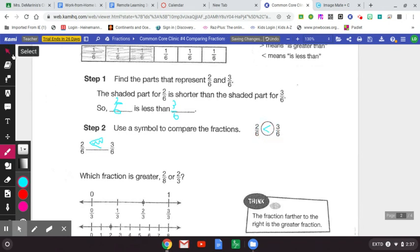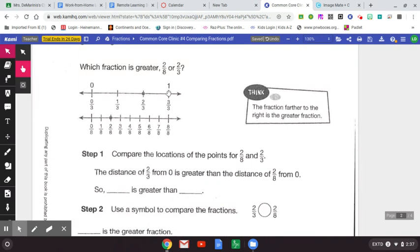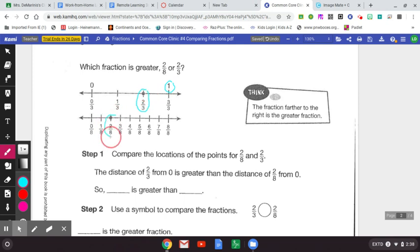Now, you can also compare fractions on number lines. So let's take a look at that idea. Whichever fraction is closest to one whole, remember this is one whole, is the bigger fraction. So what fraction is greater, two-eighths or two-thirds? Well, the first thing I have to do is just identify where two-thirds and two-eighths is. Here's two-thirds and here is two-eighths. So let's just look now. We're going to compare the locations of two-thirds and two-eighths. And I always tell third graders, mark it up. Look at this distance. That distance. And then look at this distance.